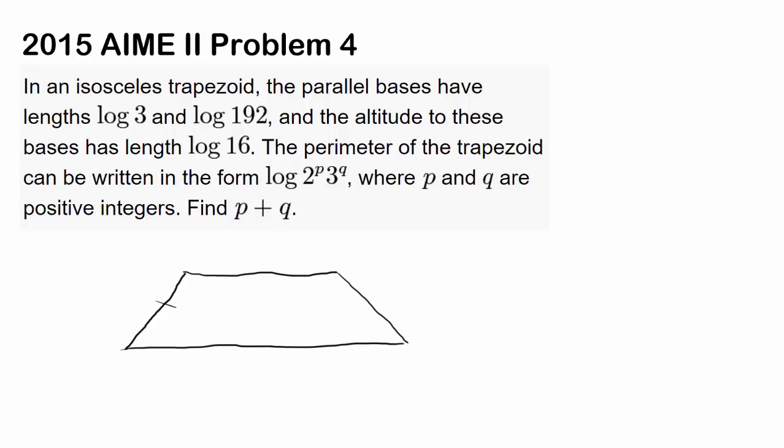The isosceles trapezoid has parallel bases with lengths log 3 and log 192. This one is log 3 and the other is log 192. The altitude to these bases has length log 16.